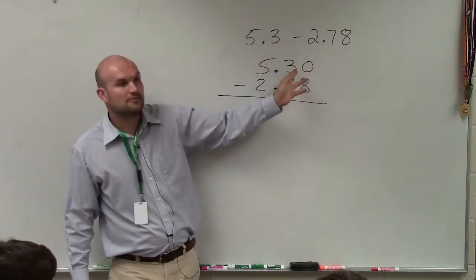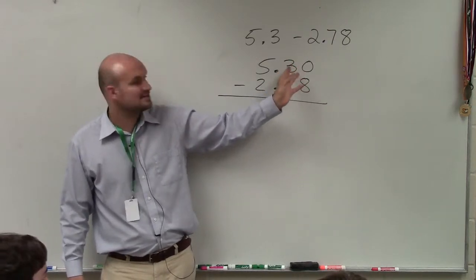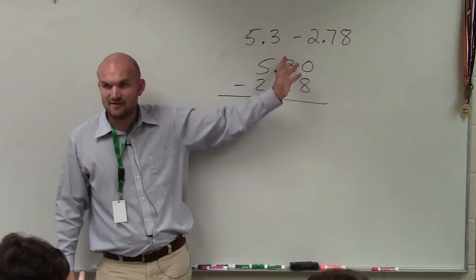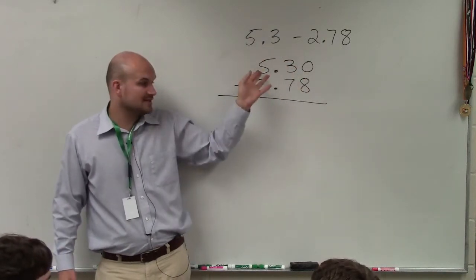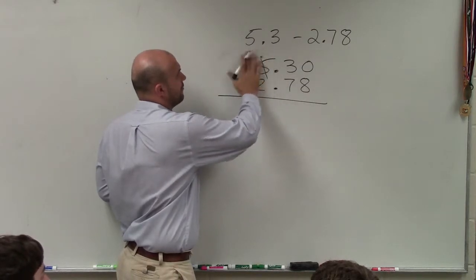So therefore, we need to look to the 3 to borrow. Well, we can borrow from the 3, but the problem is we're going to have to borrow from the 3 anyways because we can't subtract a 7 from the 3. So I go over to the next one, which is a 5, and I'll borrow from the 5, which will make that a 4.